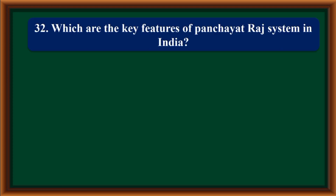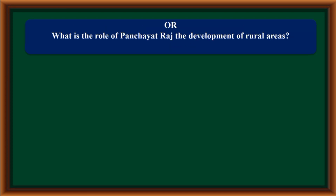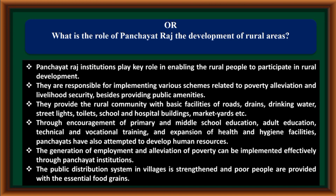Which are the key features of the Panchayat Raj system in India? A three-tier structure of district, taluk, and village panchayat with the Gram Sabha as foundation. Direct and periodic elections. Reservation of seats for SC, ST, backward classes, and women. Provision of major financial and administrative responsibilities, budget and audit requirements. Provision for executive support staff, and a strict procedure for dissolution of panchayat, with mandatory elections within six months of dissolution.